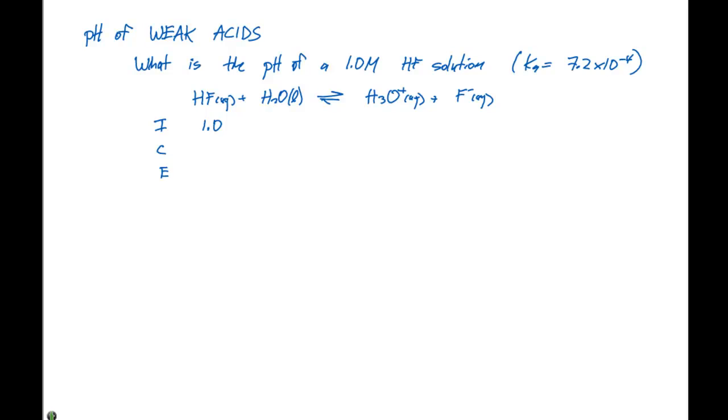Initially, we have a 1.0 molar concentration of HF. The water does not show up in the equilibrium expression because its concentration is going to be constant. Our H3O plus and our F minus are going to start out with the concentration of zero.